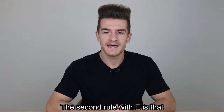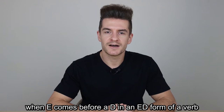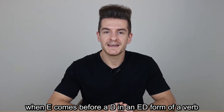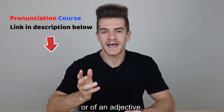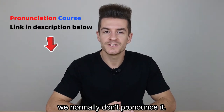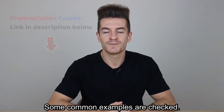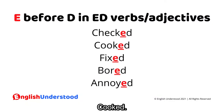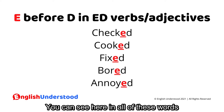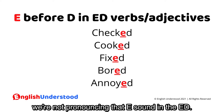The second rule with E is that when E comes before a D in an -ED form of a verb or adjective, we normally don't pronounce it. Some common examples are: checked, cooked, fixed, bored, annoyed. In all of these words, we're not pronouncing that E sound in the -ED ending.